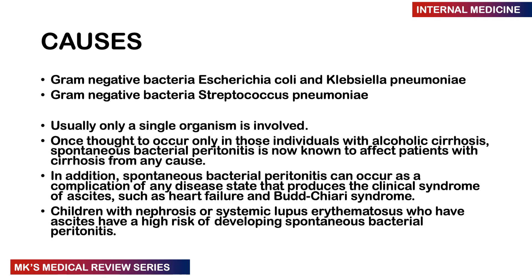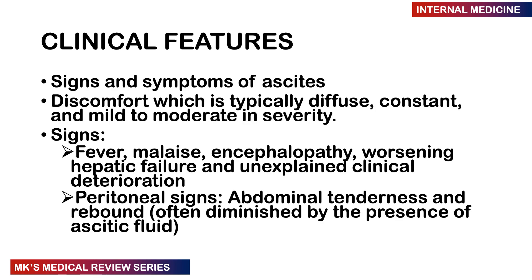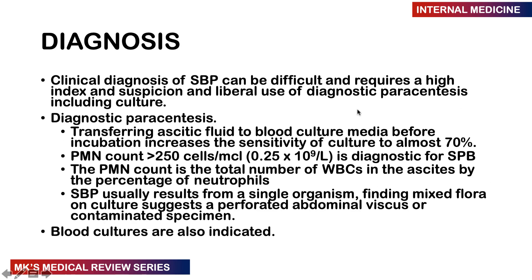We also see SBP in clinical syndromes presenting with ascites, such as heart failure, Budd-Chiari syndrome, and even children with nephrosis or systemic lupus erythematosus — those with ascites are at risk. Clinical features include the signs and symptoms of ascites: abdominal distention, dullness to percussion, shifting dullness, and fluid thrills. There is also diffuse, constant, mild-to-moderate abdominal discomfort. Signs may include fever, malaise, encephalopathy, worsening hepatic failure, and unexplained clinical deterioration. Peritoneal signs such as abdominal tenderness and rebound tenderness may be present but are diminished by the ascitic fluid.